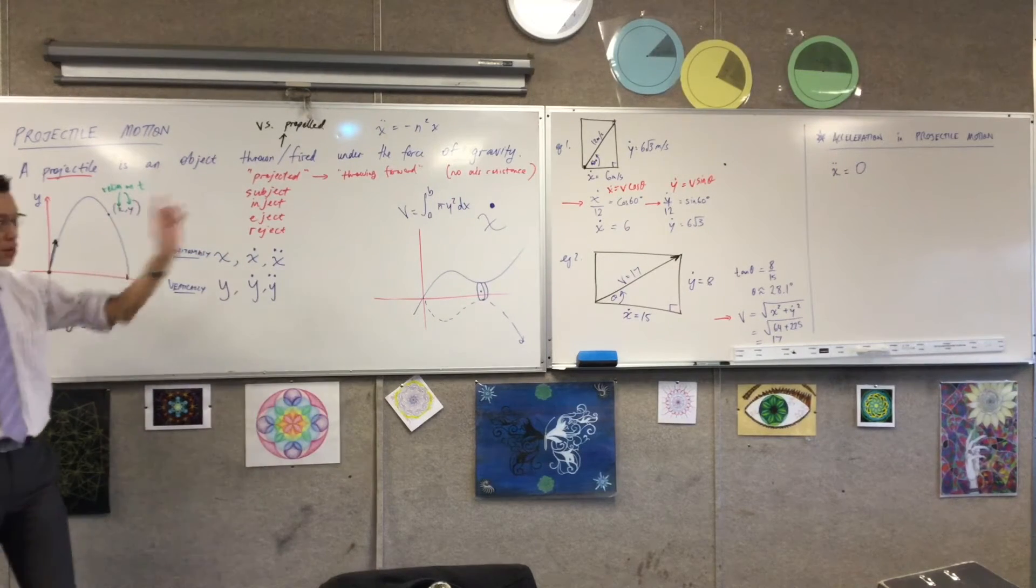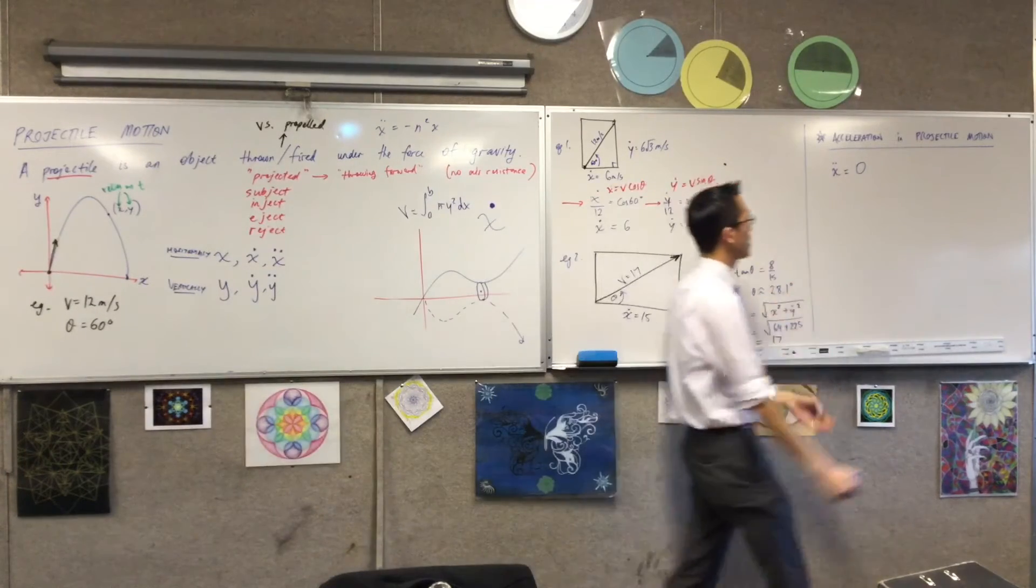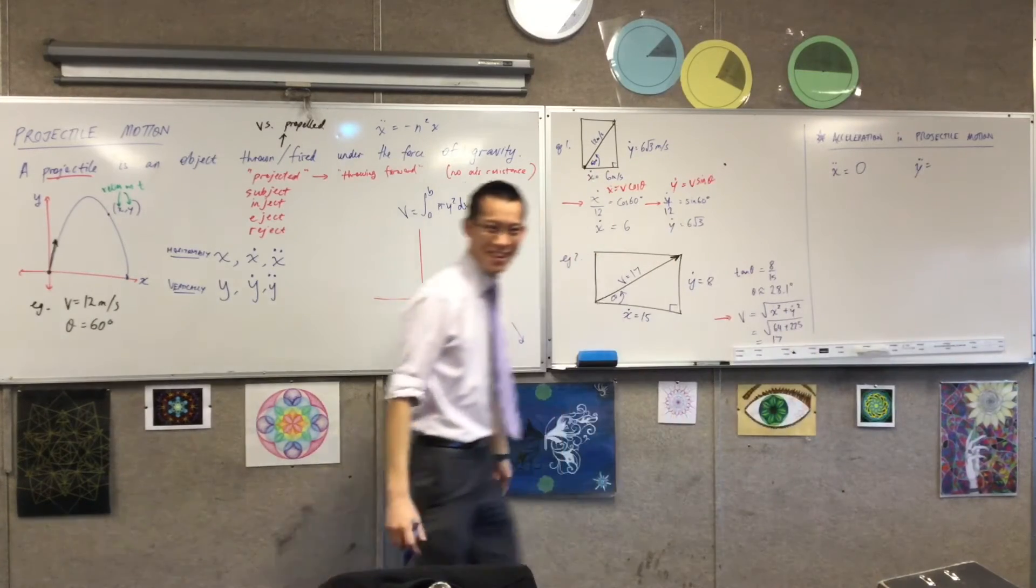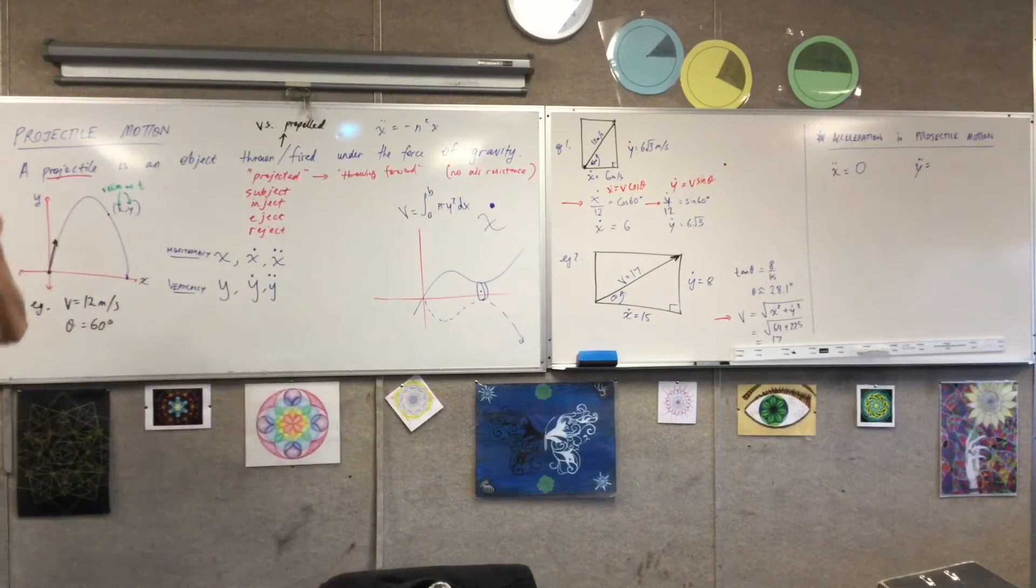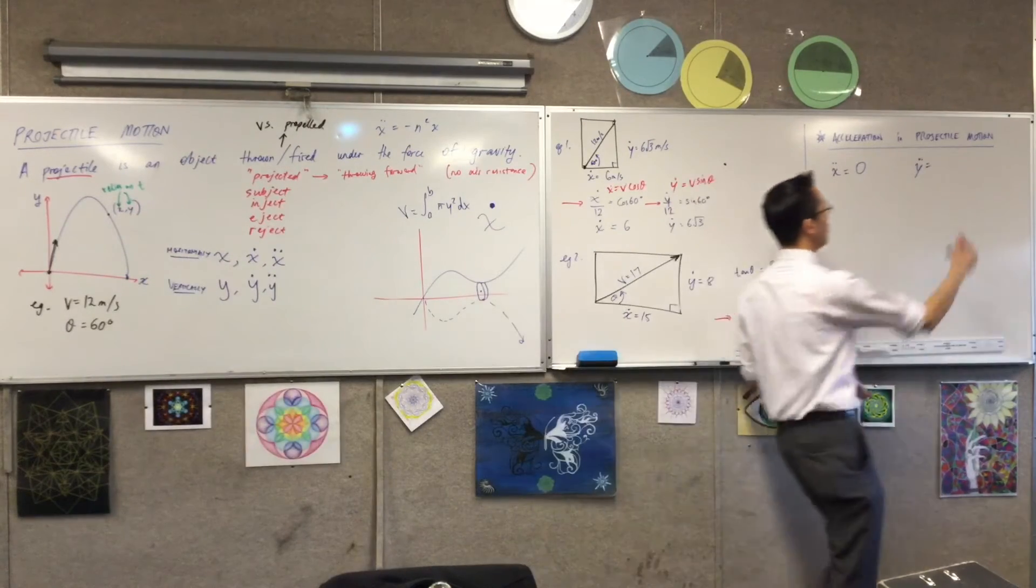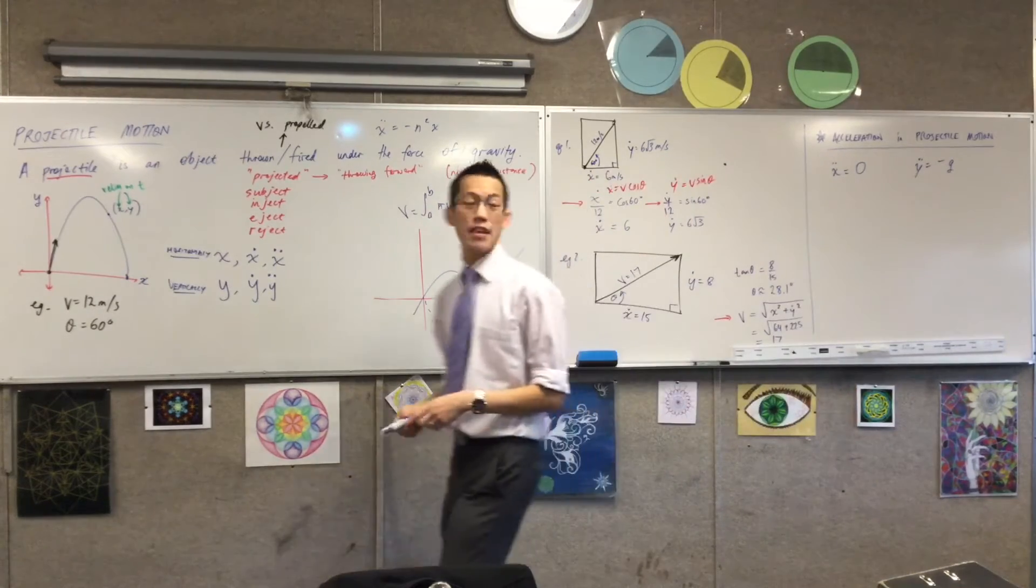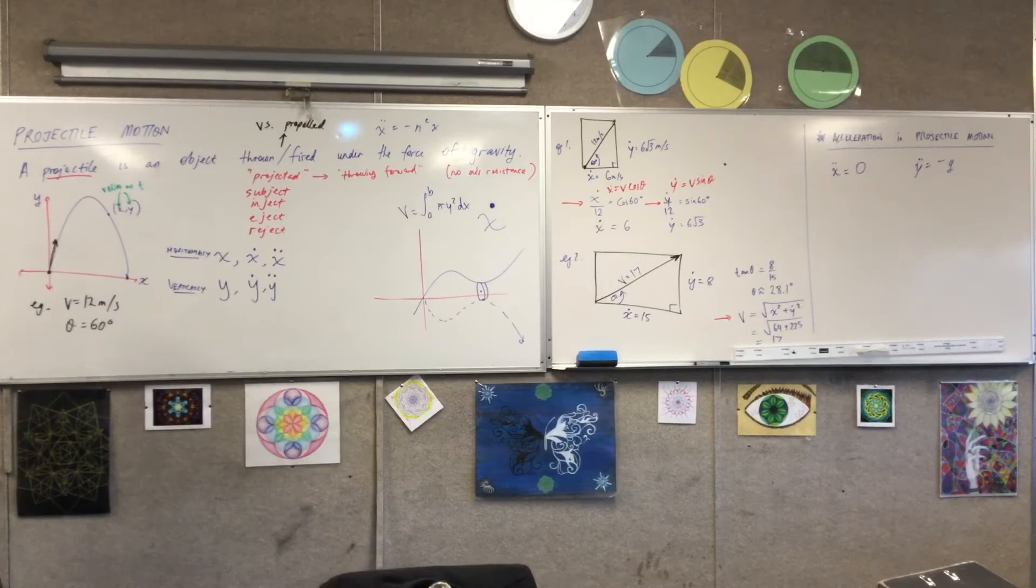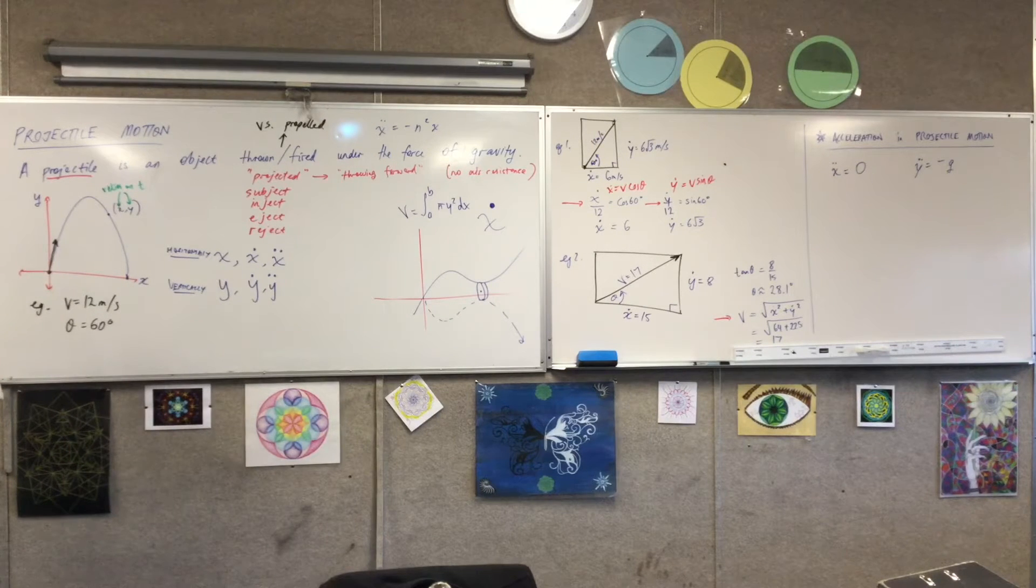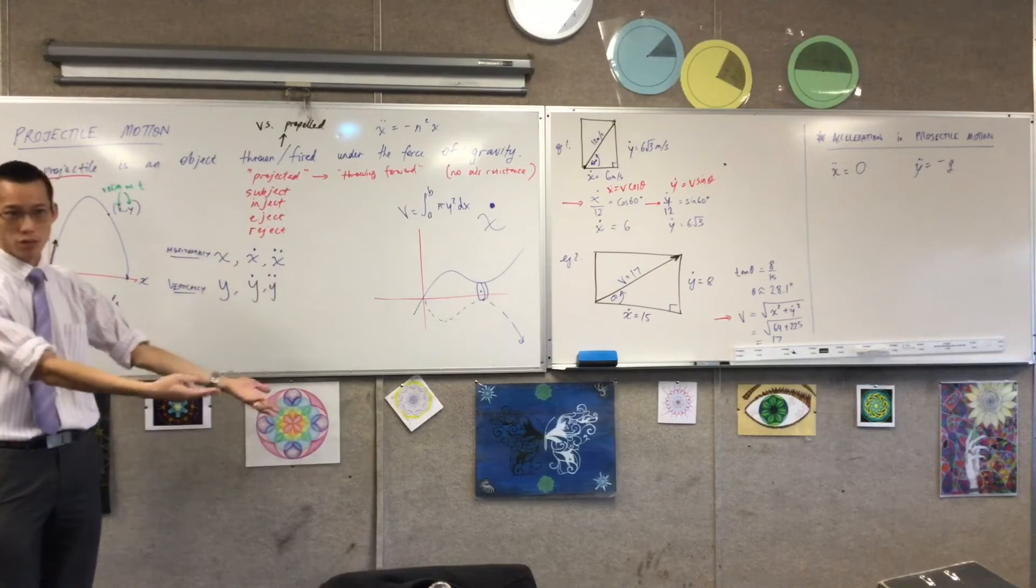I think nothing more horizontally. Because we're not thinking about propulsion, we're not thinking about air resistance either, which is what would slow it down because it's running into air. Because we're not thinking of anything of that sort, there is no change in the horizontal velocity. Now, this is really interesting. Since there's no change in horizontal velocity, this is your acceleration equation, horizontally speaking.